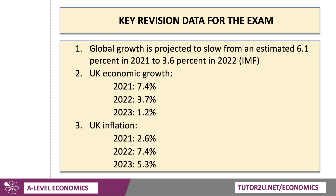Here's some key revision data for the exam. The world economy's global growth is projected to slow from 6.1% in 2021 to 3.6% in 2022, according to the IMF's World Economic Outlook published in April 2022. Now for the UK, we're getting slower growth: 7.4% in 2021 — obviously a rebound from the pandemic — that halved in 2022 as forecast, and it's going to more than halve next year according to the IMF. So growth slowing dramatically. And inflation rising: 2.6% last year, forecast to average 7.4% in 2022, forecast to come down to 5.3% next year — but still around two and a half times the government's target. So that's some good data to have in your revision notes ahead of your macro exams.